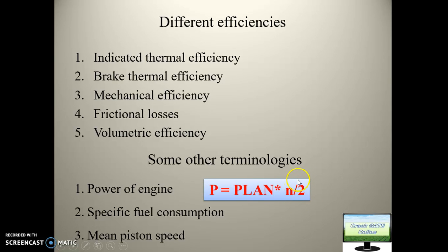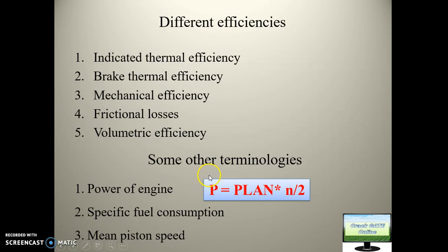The division by 2 is used for four-stroke engines, since tractor engines are four-stroke. For a two-stroke engine there is no division by 2 — it would simply be P×L×A×N×n. I recommend always using SI units — don't memorize unit-specific forms like P in N/m², L in m, N in RPS or RPM separately. Just keep everything in SI and you will always get power in watts, which you can then convert to kilowatts or horsepower. I will solve a GATE question based on this equation shortly.